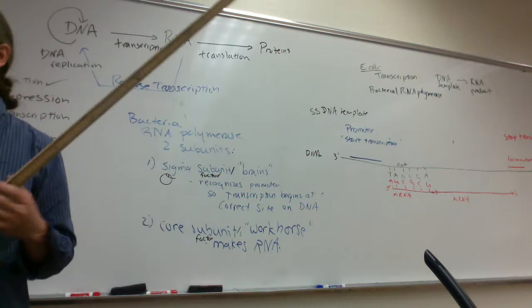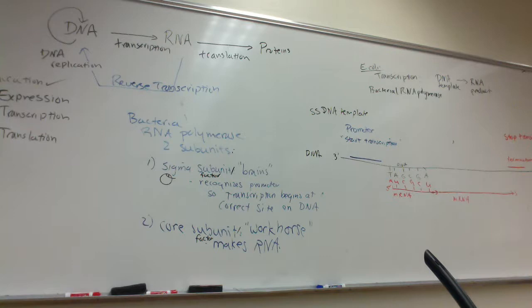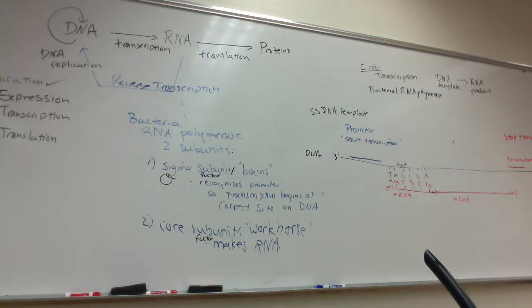Why not just have the core subunit since it does all the work? The core subunit doesn't know where to begin — without the sigma subunit, it might start in the wrong place and synthesize an mRNA that produces a non-functional protein. So the sigma subunit is really important to ensure RNA polymerase binds at the correct start of the coding sequence. Once RNA polymerase has started transcription at the right place, the sigma subunit falls off and gets recycled.